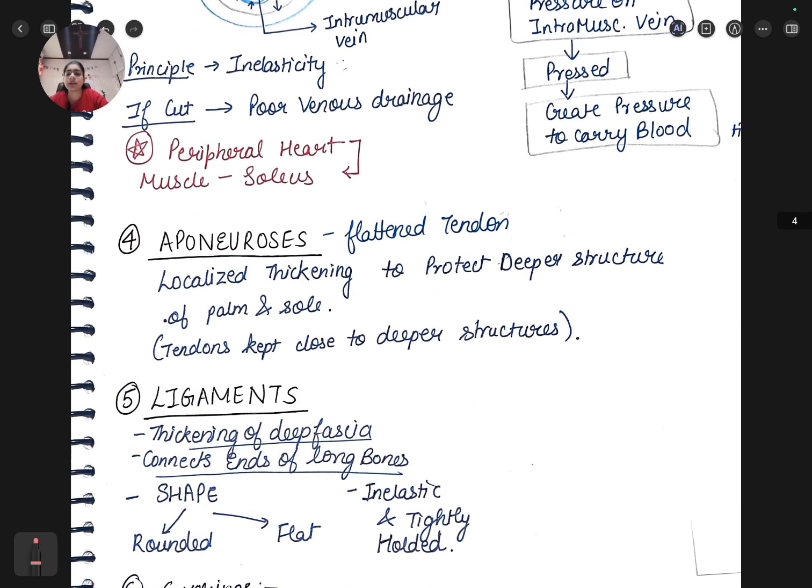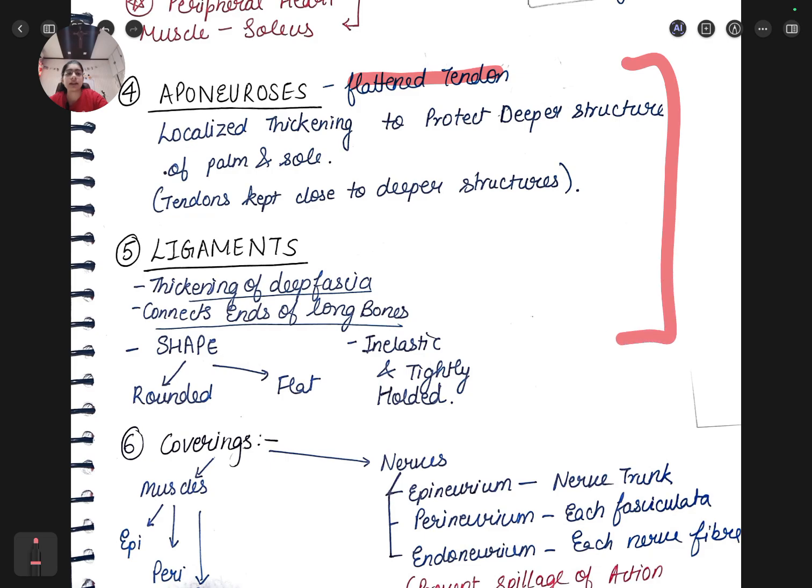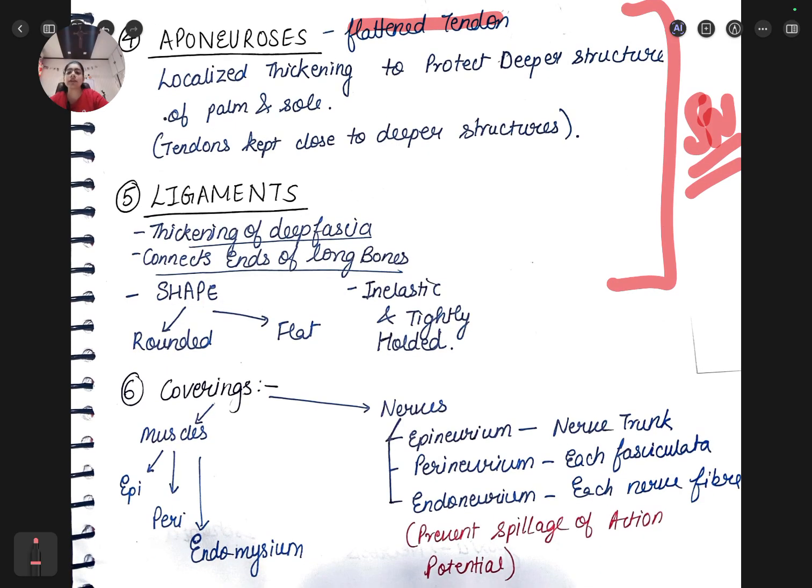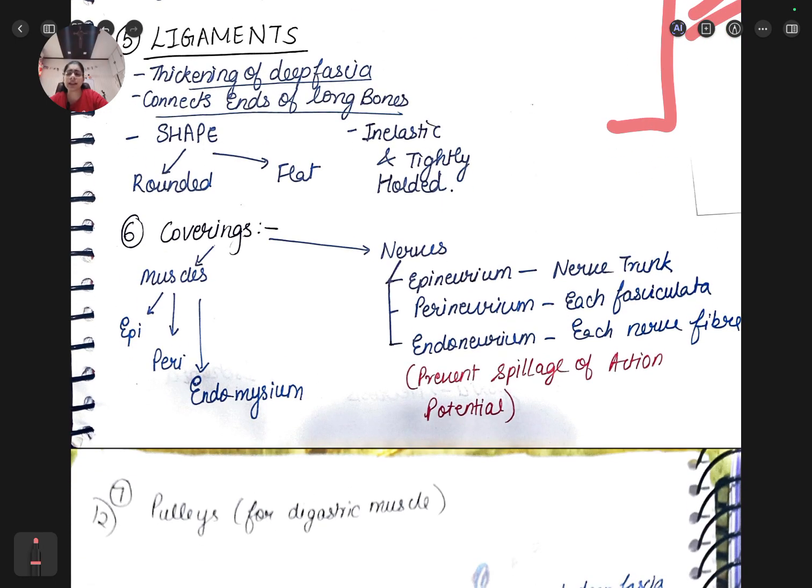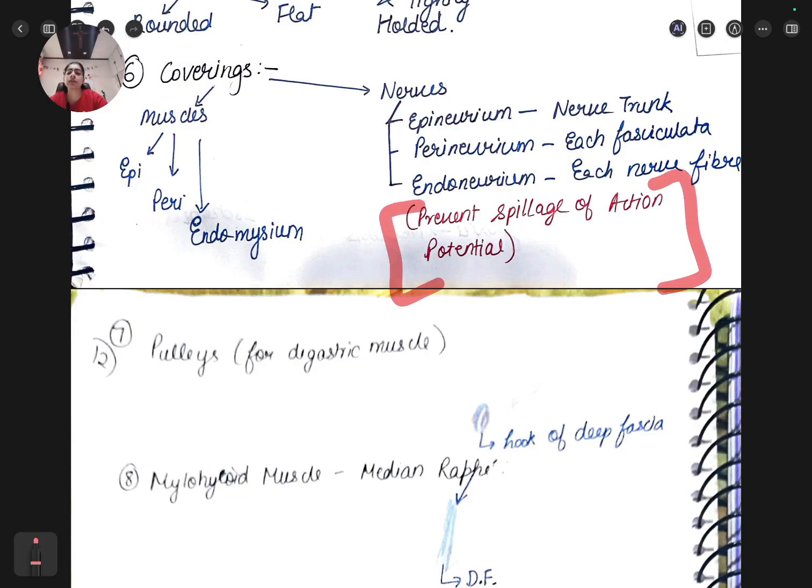Aponeurosis is the fourth modification - it is like flattened tendon and localized thickening to protect deeper structures on palm and sole. Ligaments is thickening of the deep fascia which connects the ends of the long bones. Coverings - it can be epi, peri, endomysium for muscles, and for nerves it can be epi, peri, endoneurium. You need to learn the functions as well.